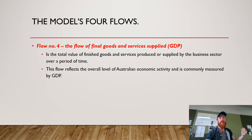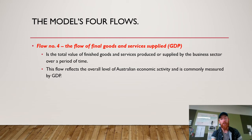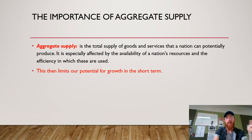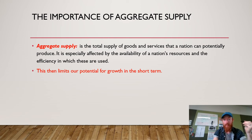Flow four is the final goods and services supplied, or GDP — the total value of finished goods and services produced or supplied by the business sector over a period of time. This flow reflects the overall level of Australian economic activity as commonly measured by GDP, or more accurately real GDP per annum, which tells us without inflation how much we've increased production over a year. Aggregate supply is the total supply of goods and services a nation can potentially produce, especially affected by the availability of a nation's resources and the efficiency with which they're used.